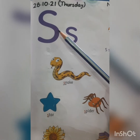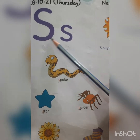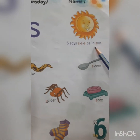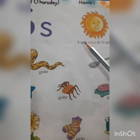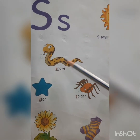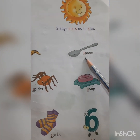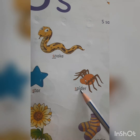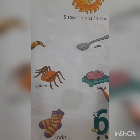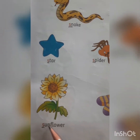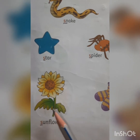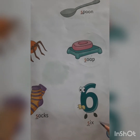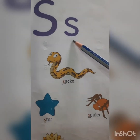Let's see the next letter. This is letter S children. Capital S. This is small s. What is the sound of letter S? It's 'S' in sun. S-U-N. Sun. S-N-A-K-E. Snake. S-P-O-O-N. Spoon. S-T-A-R. Star. S-P-I-D-E-R. Spider. S-O-A-P. Soap. S-U-N-F-L-O-W-E-R. Sunflower. S-O-C-K-S. Socks. S-I-X. Six.